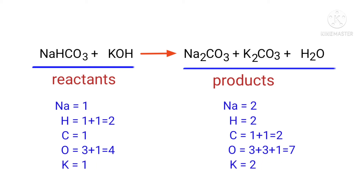If you look at this equation, the equation is not balanced. On the reactants side there are 1 sodium atom, 2 hydrogen atoms, 1 carbon atom, 4 oxygen atoms, and 1 potassium atom. On the products side there are 2 sodium atoms, 2 hydrogen atoms, 2 carbon atoms, 7 oxygen atoms, and 2 potassium atoms.